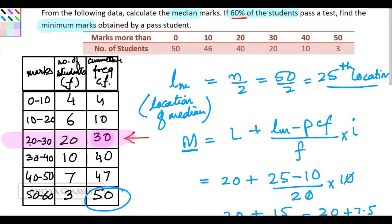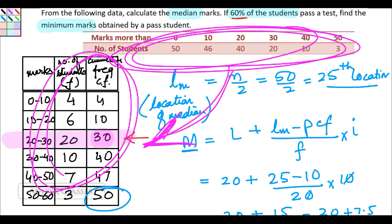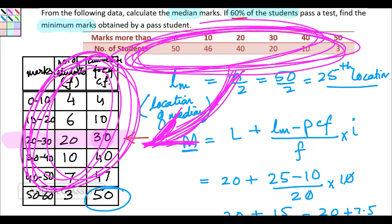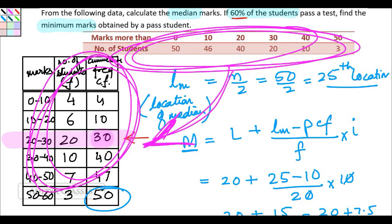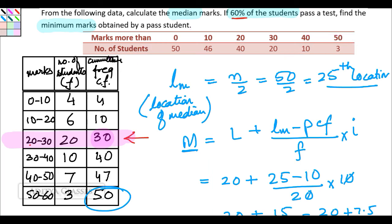So our answers for this case are: median marks = 27.5, and minimum marks scored by a passing student = 25. The question was straightforward once we decoded the cumulative data and converted it into individual class frequencies - the representation we know and can apply our formulas to. Whenever we come across some other kind of data representation, we need to bring it into a known format where we can understand and apply our formula.